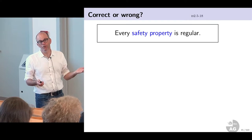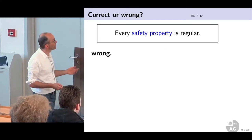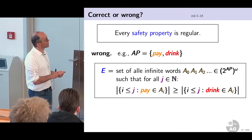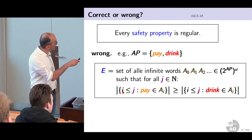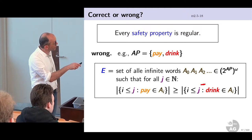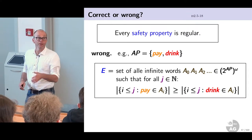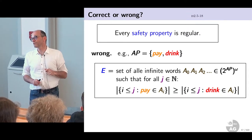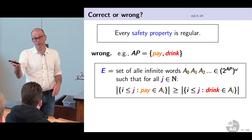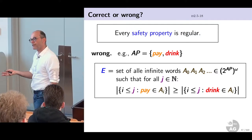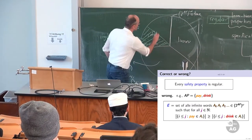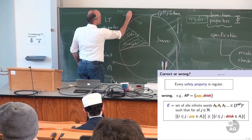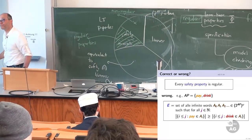Not every safety property is regular. A counterexample: the set of infinite words such that the number of positions containing 'pay' is at least the number of positions containing 'drink'. This requires counting, which as you know from automata theory is not regular. Therefore this is an example of a non-regular safety property — it is context-free. So we really have a quite severe restriction today — we only consider regular safety properties — but I do this for simplicity to introduce the first model checking algorithm.